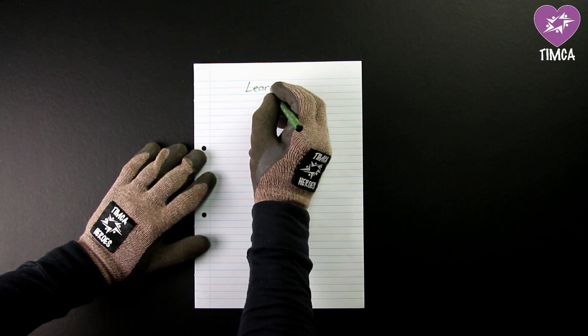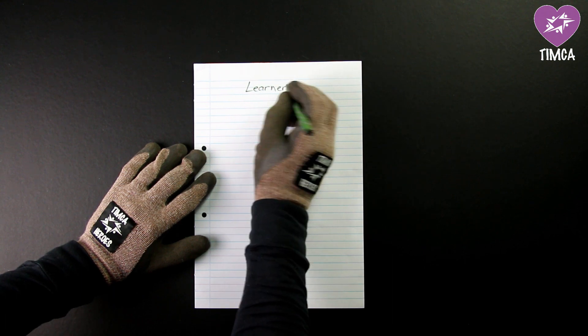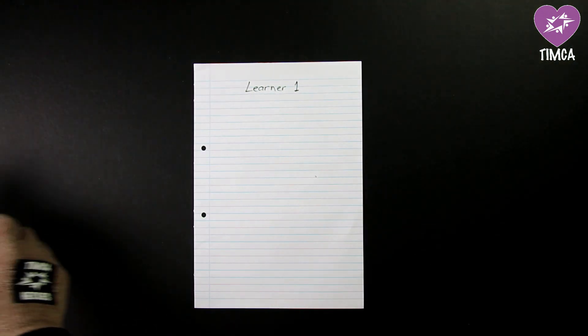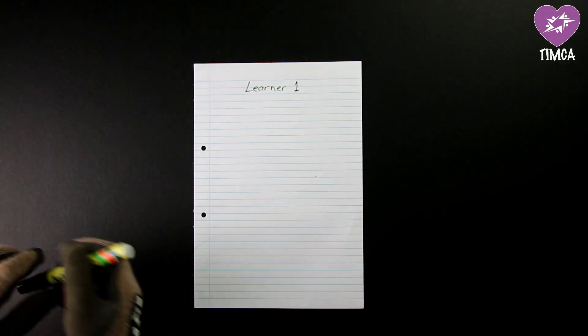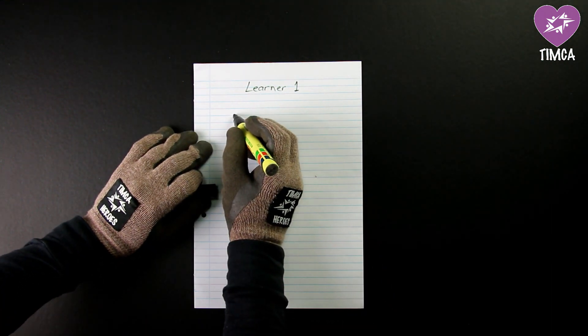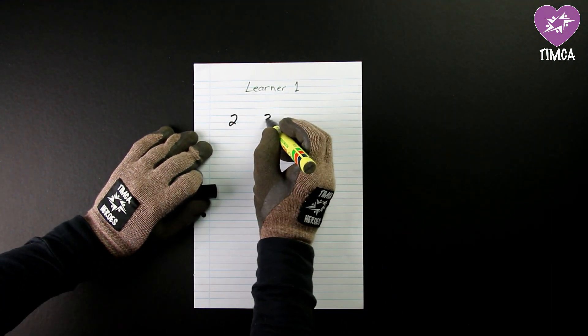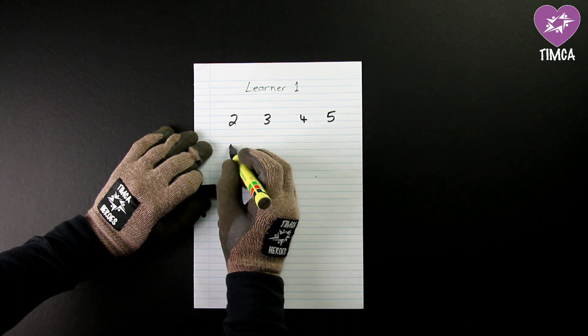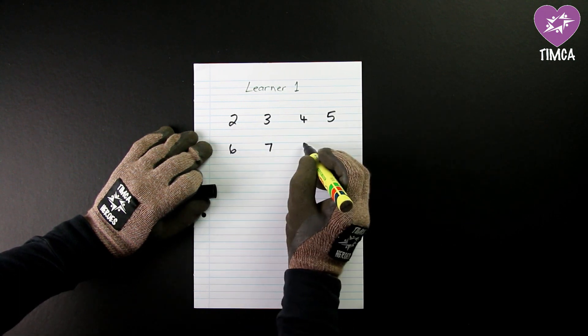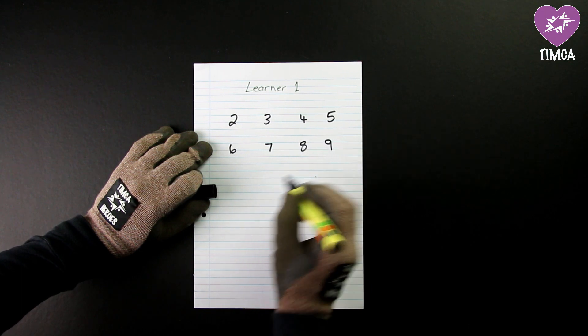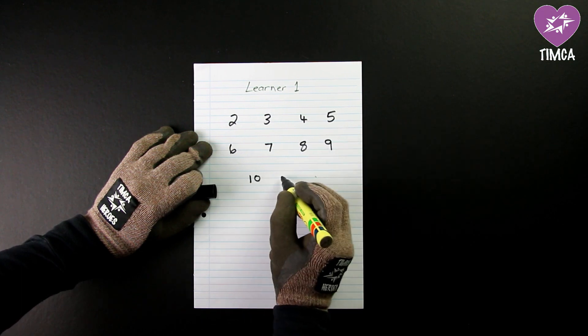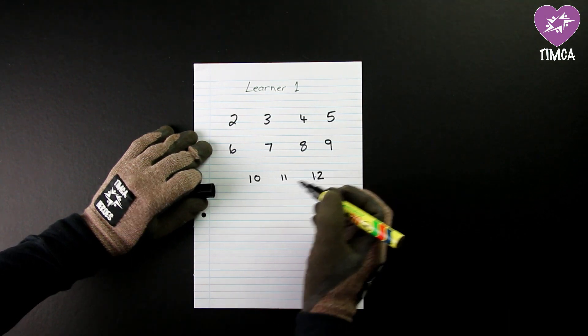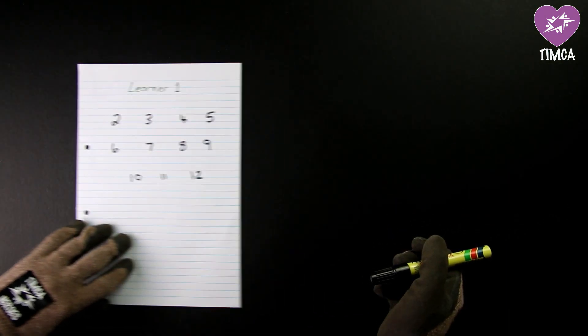Firstly one must put onto a piece of paper your name so learner one goes on there and then the numbers from two all the way through to twelve. The reason they're being spaced is so that you can cross them out easily which you will see now in the video. We are showing you learner one's card and learner two will also do the same card and then put it aside to wait for the game to start.